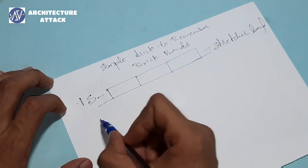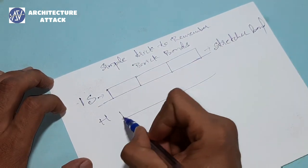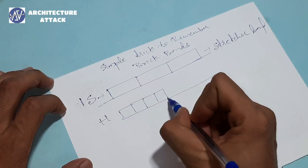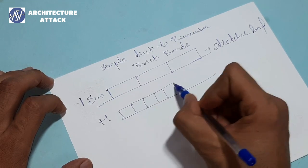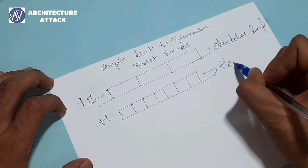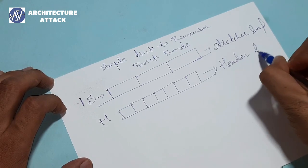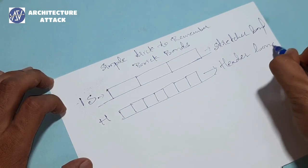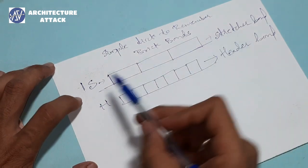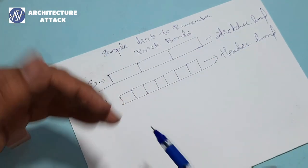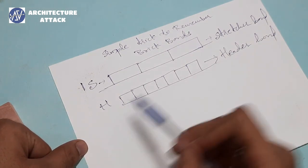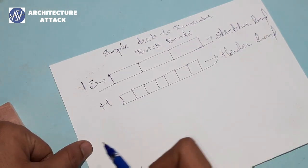If in elevation we see headers only — headers, headers — then this is called header bond. So: stretcher bond if we see stretchers in elevation, header bond if we see headers in elevation.